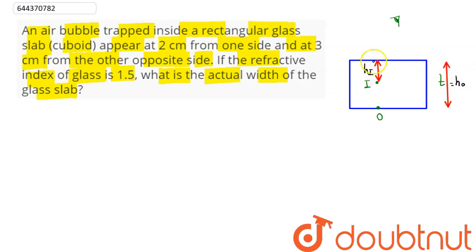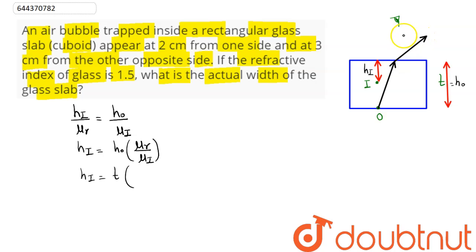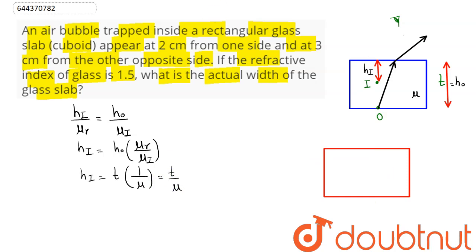Here h_o is the real depth and h_i is the apparent depth. When light travels from a denser to a rarer medium, the refractive index decreases and the refraction angle increases. We have: apparent depth = real depth × (refractive index of refracted ray / refractive index of incident ray) = t × (1 / μ) = t/μ.